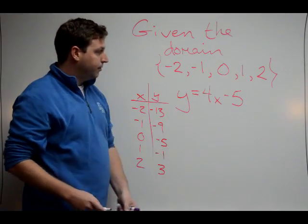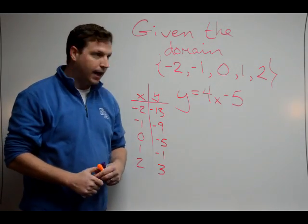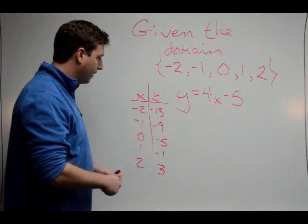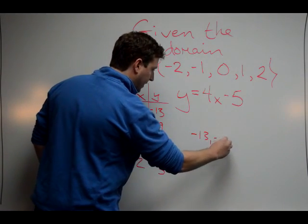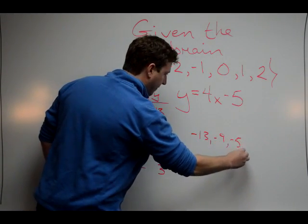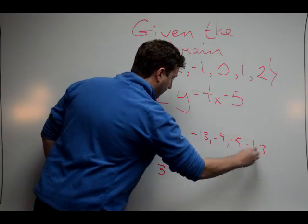And that's just simply plugging in for x when we're given a certain domain and finding the range. So the range is going to be negative 13, negative 9, negative 5, negative 1, and 3.